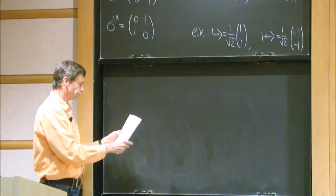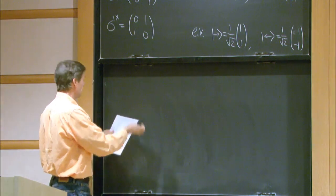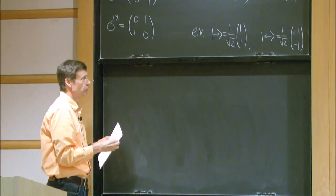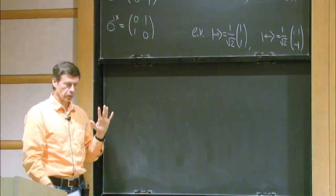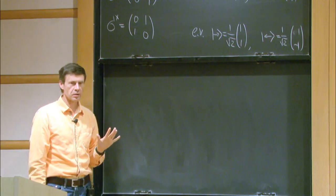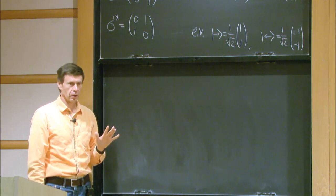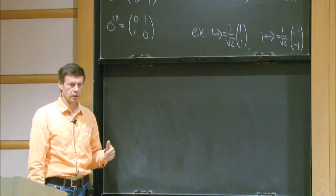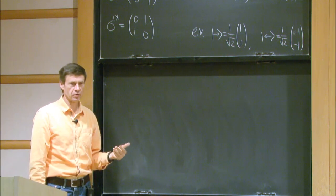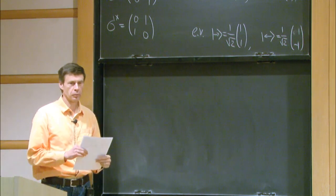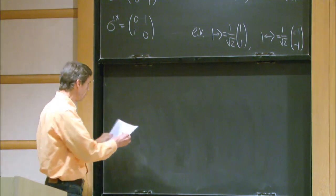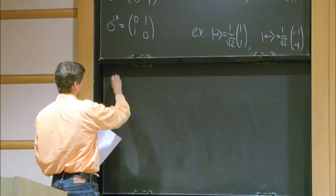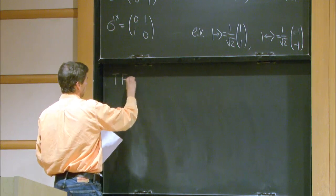So first, let me write an example of some Hamiltonian, because we'll be considering quantum Hamiltonians and their ground states. And the goal is to understand those ground states and construct the space of such ground states and find their homotopy types. And this is an example. It's called Transverse Field-Ising model.